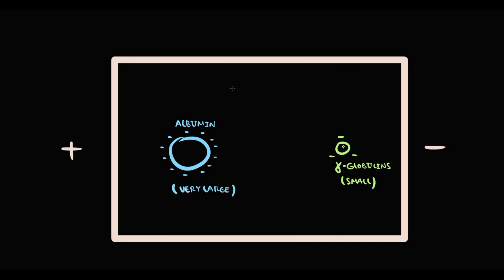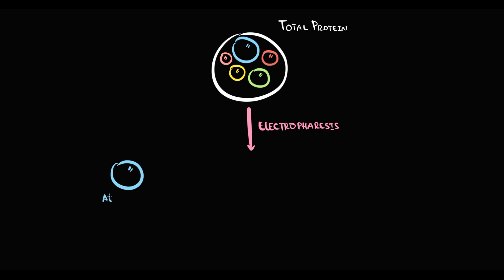And based on this principle we have alpha 1 fraction, alpha 2 fraction, and beta fraction. So by electrophoresis we can separate proteins on fractions.